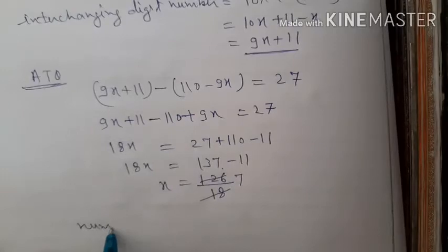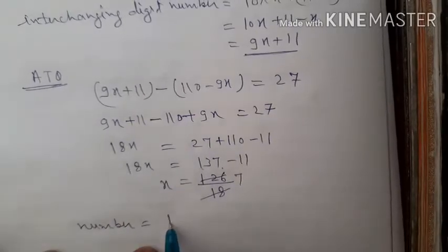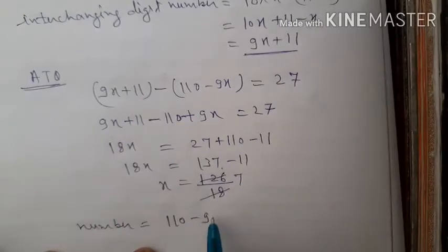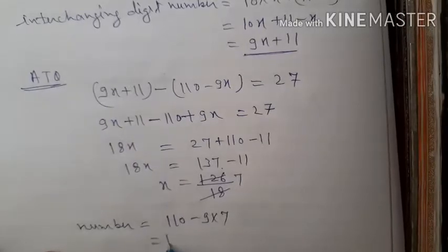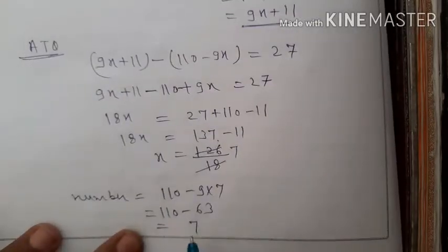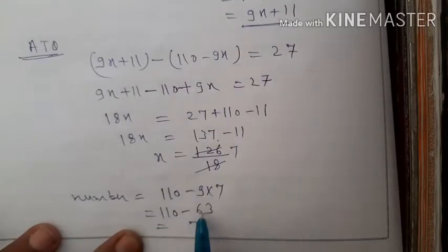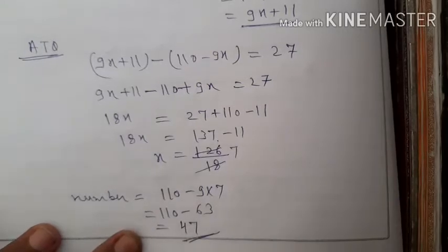Therefore the original number equals 110 minus 9x. Substituting x equals 7: 110 minus 9 times 7 equals 110 minus 63. That gives 47. So 47 is your answer.